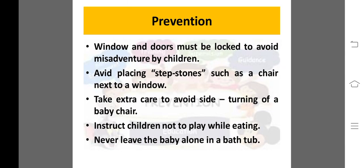Windows and doors must be locked to avoid misadventures by children. کھڑکی اور دروازے ہمیشہ locked کر دینے چاہییں کسی بھی mishappening سے بچانے کے لیے۔ Avoid placing step stones such as a chair next to a window کیونکہ بچہ ایک step سے دوسرے step پر چڑھ کر window تک پہنچ سکتا ہے۔ Take extra care to avoid side turning of a baby chair اور movable chairs سے بھی بچے کو خطرہ ہو سکتا ہے۔